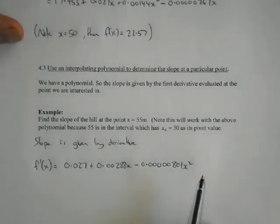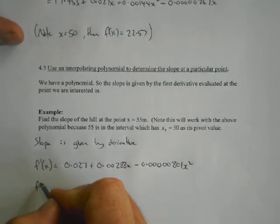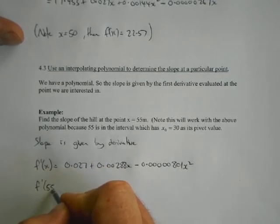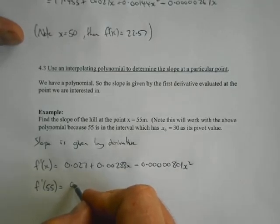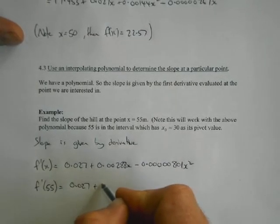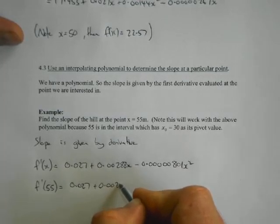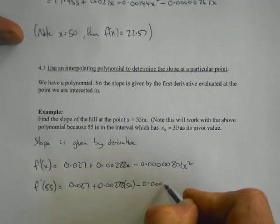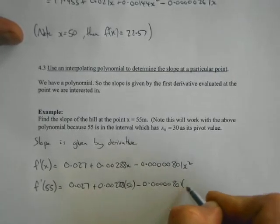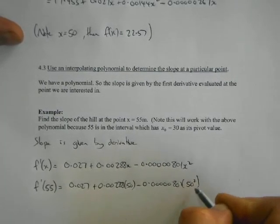And so all we need to do now is bung 55 into here. So f dash 55, so the slope when x is equal to 55 will be 0.027 plus 0.0288 lots of 50 minus...801 lots of 50 squared,